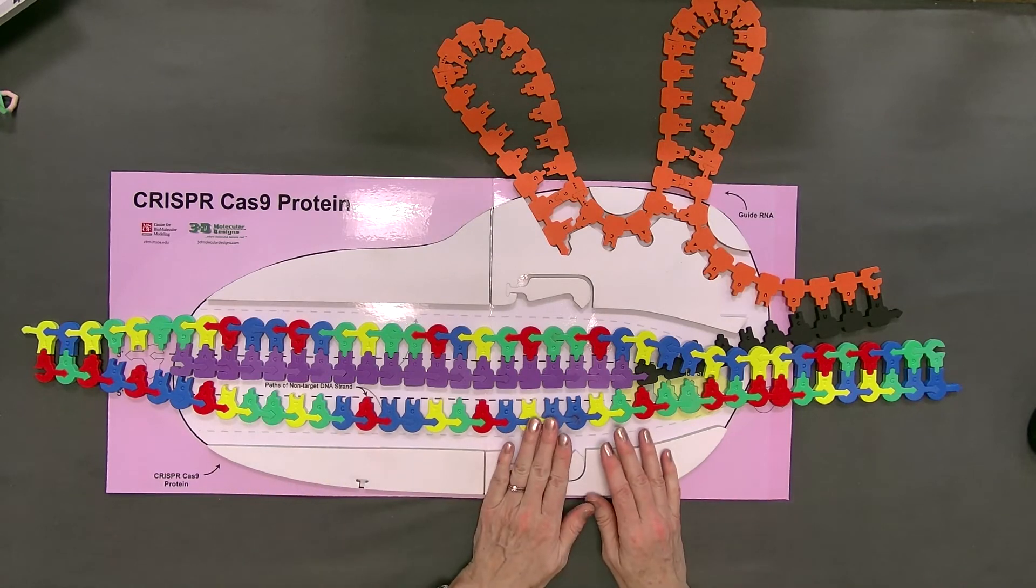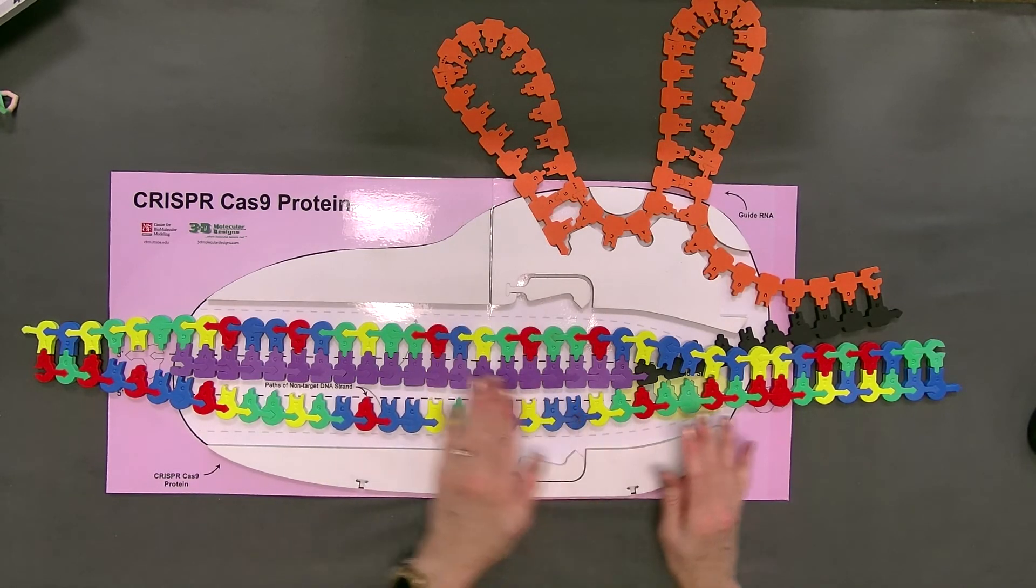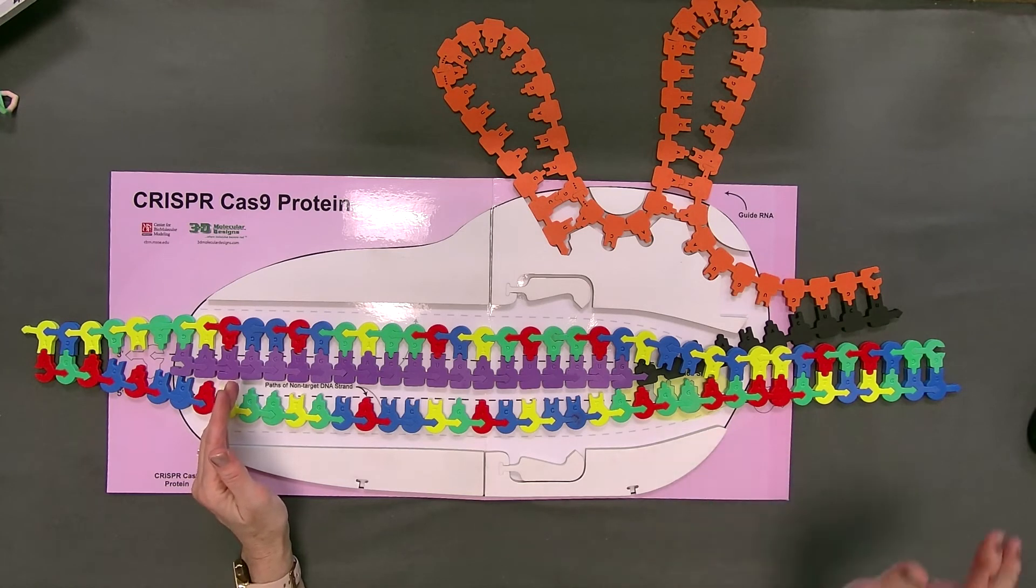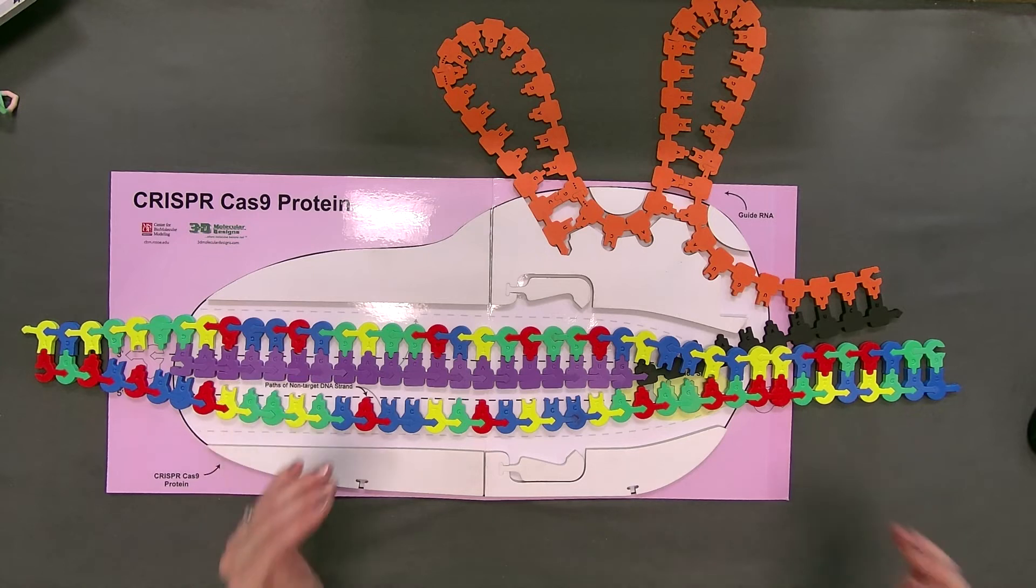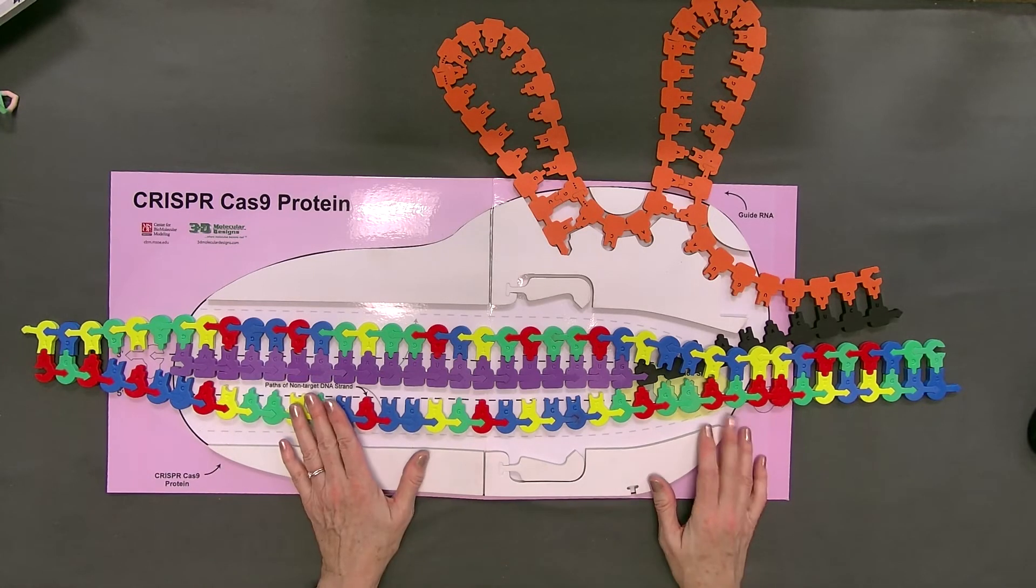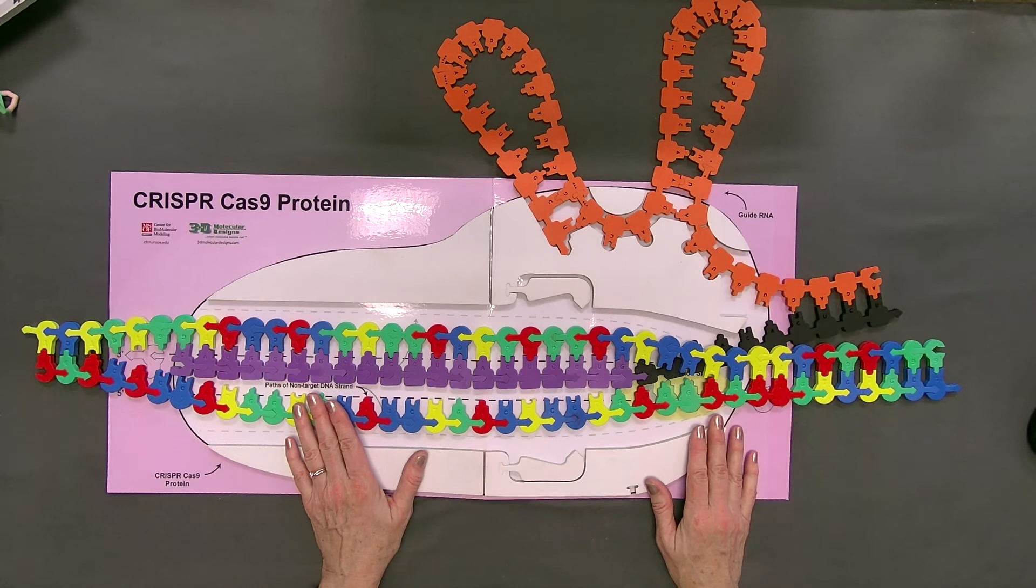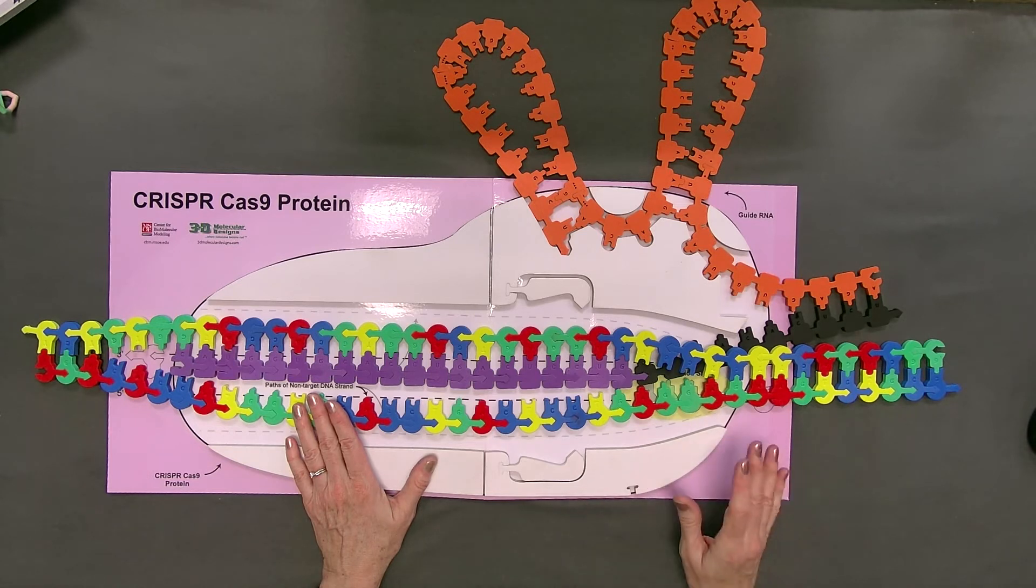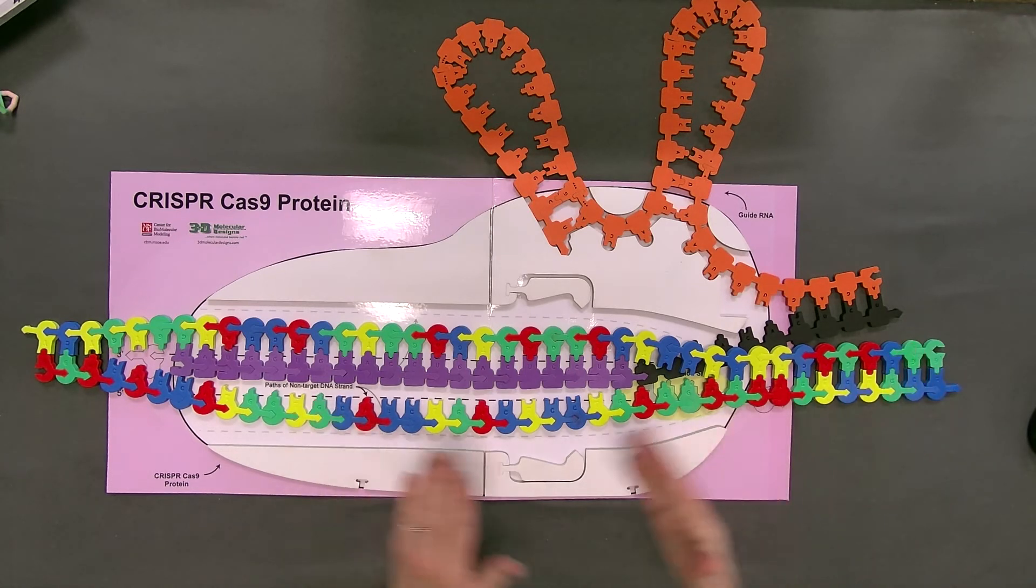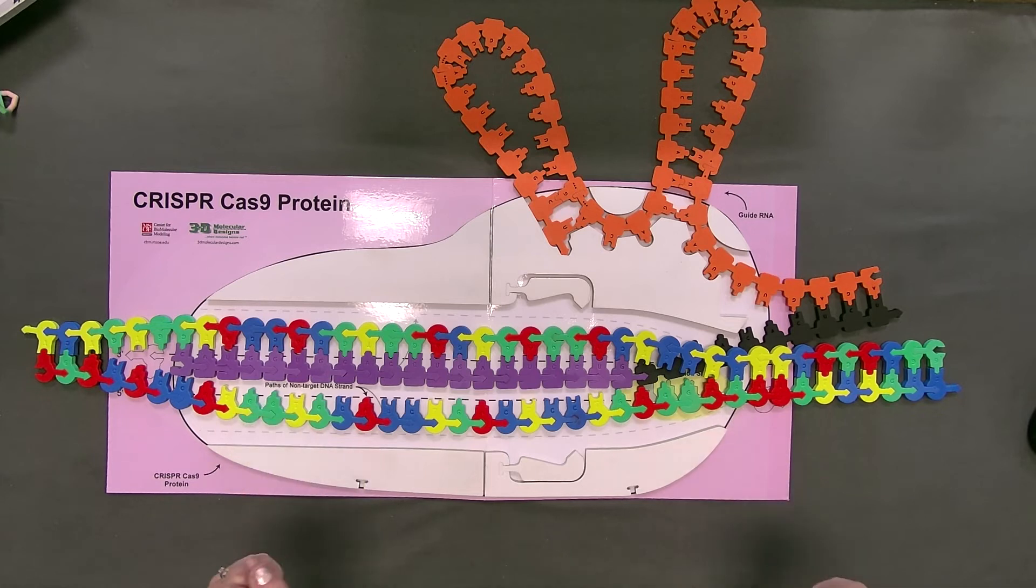All right. So now the Cas9 senses that we have a match. And again, we're going to talk about the mechanisms of this later on, and you're going to learn about how Cas9 does this. But remember, what is Cas9's main job? It is an endonuclease. What it does is it cuts DNA, nucleic material. It does so, though, in a sequence-specific fashion. So once the guide RNA makes a perfect match, that changes the conformation of Cas9 such that two endonuclease domains—